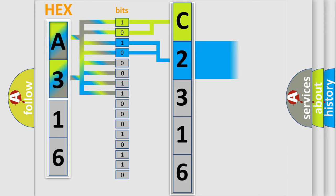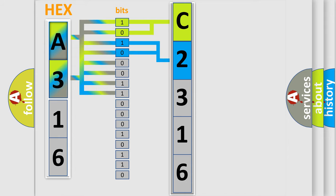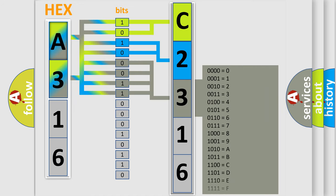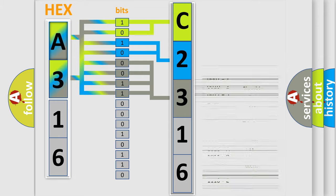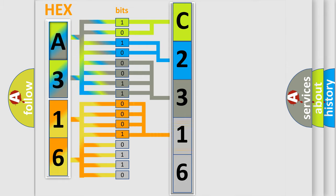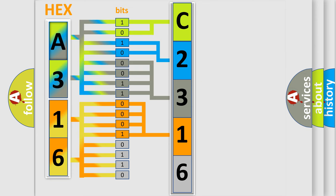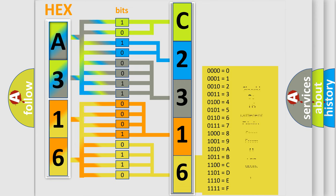The next two bits determine the second character. The last four bits of the first byte define the third character of the code. The second byte is composed of a combination of eight bits: the first four bits determine the fourth character, and the combination of the last four bits defines the fifth character.